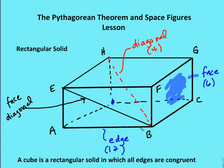An edge is a length of the rectangular solid. So AB is an edge, AE is an edge, EF is an edge, FG is an edge. There are actually 12 edges and there are six faces — four around the side and two bases, top and bottom.